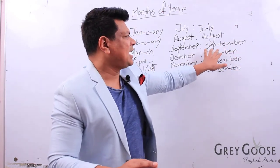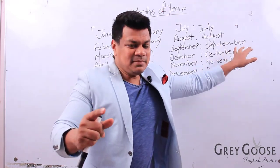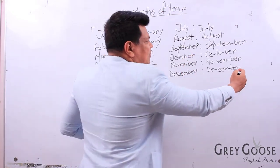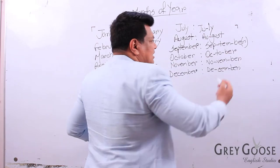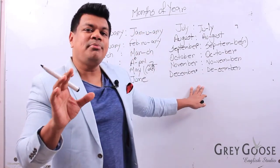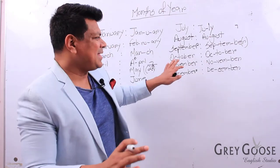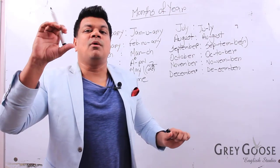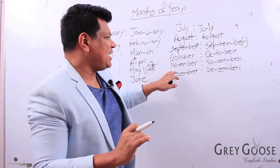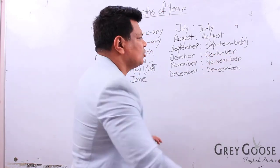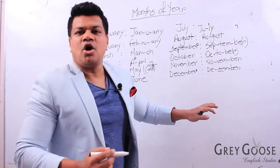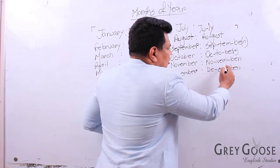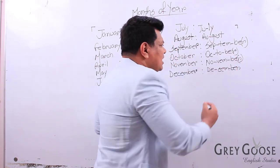Then September — I've broken it into three syllables: 'Sep,' then 'tem,' then 'ber.' As you may have observed in my previous classes, in British English we don't pronounce the 'r' — we keep it implied. So it would be September. I leave my mouth open: September, September. And the same way: October. We are not going to pronounce it 'October' but October.